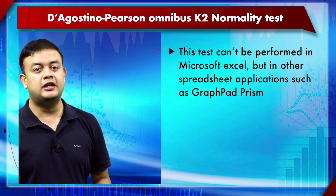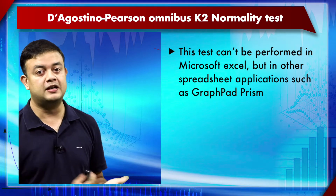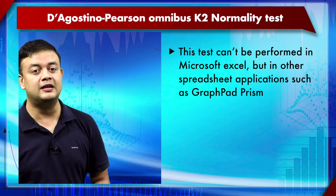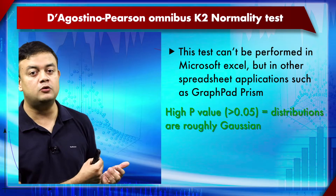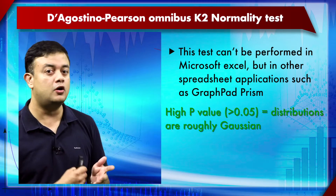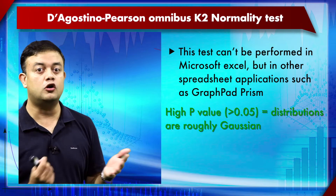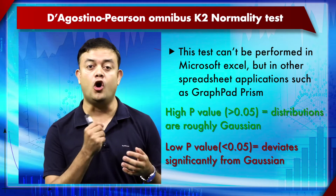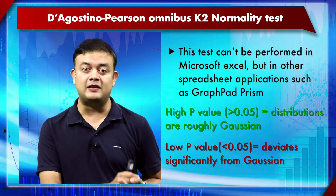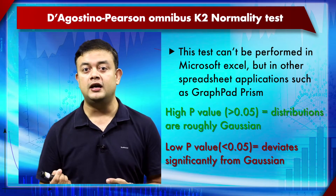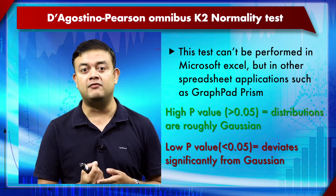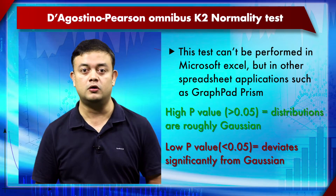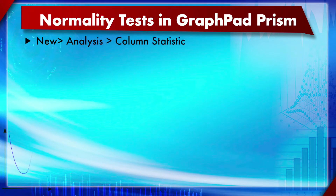This Omnibus K2 normality test cannot be performed in Microsoft Excel, but you can do it in GraphPad Prism. If you get a high p-value, the distribution is more or less normally distributed. If you get a low p-value — less than 0.05, which is the standard threshold also known as the two-sigma threshold — that indicates significant deviation from the Gaussian.